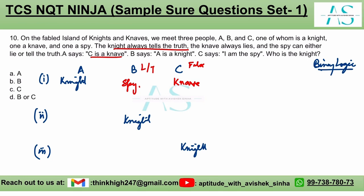In Case 2, B is the knight. B says 'A is the knight' — but since the knight always tells the truth, this would make both A and B the knight, which is not possible. So this scenario is ruled out.